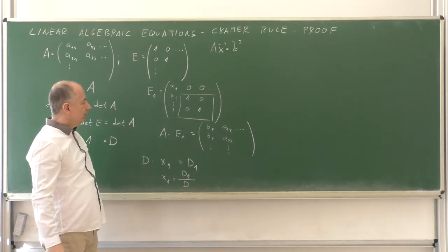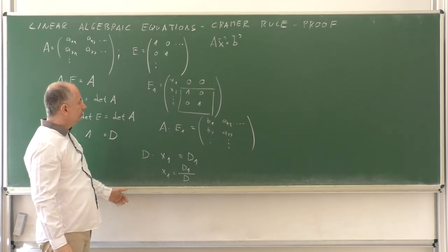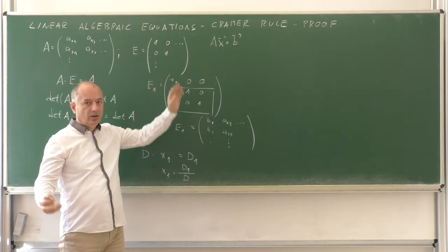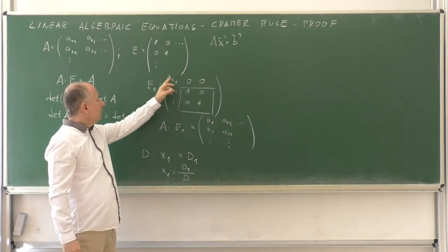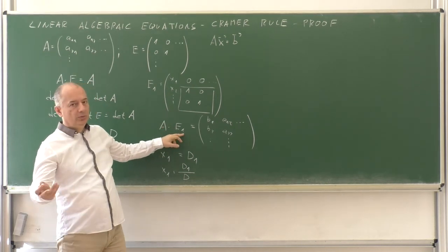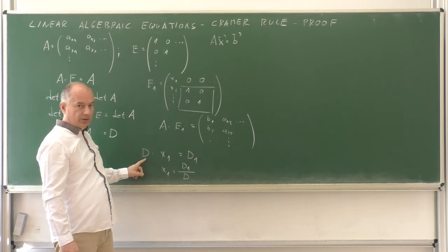Well, and for other unknowns X1, the case is very similar. We don't replace the first column, but the second or third column we want with the unknowns. And then, instead of E1, we would have E2, E3 and so on. The determinant of A is still D.